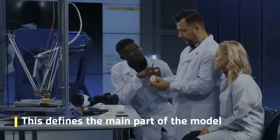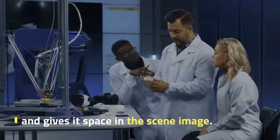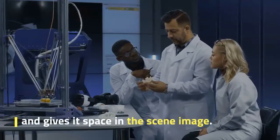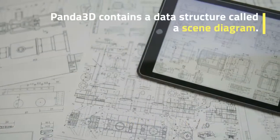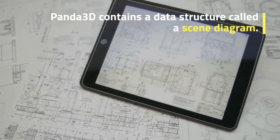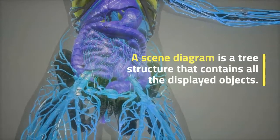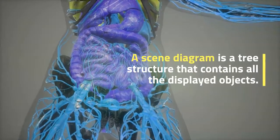This defines the main part of the model and gives it space in the scene image. Panda3D contains a data structure called a scene diagram. A scene diagram is a tree structure that contains all the displayed objects.